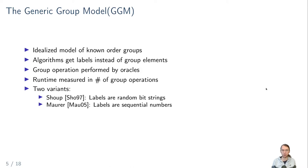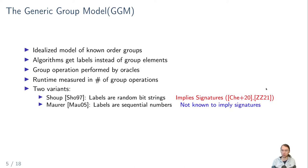There are two variants of the generic group model — one by Shoup and one by Maurer — and they differ in how they assign these labels. In Shoup's generic group model, every group element gets a random bit string as a label from some domain that is large enough. While in Maurer's generic group model, the labels are sequential, so whenever a new group element is given to the adversary, it just gets the next label, like one, two, three — they are completely meaningless, just a sequence of numbers. In Shoup's generic group model, we know that this implies signatures — you can actually prove Schnorr signatures secure in this model, and it even can be used to build a random oracle. While in Maurer's model, it's not known to imply signatures. So we use Maurer's generic group model, because otherwise impossibility results aren't really feasible since we know there actually are signatures in Shoup's generic group model.